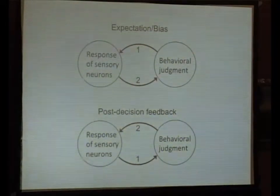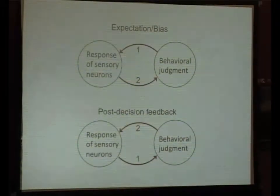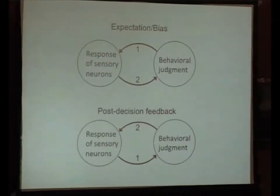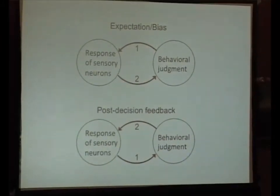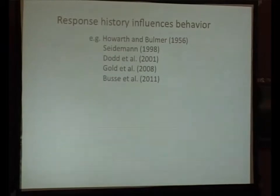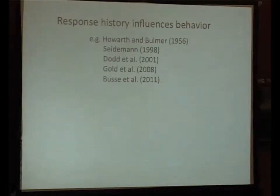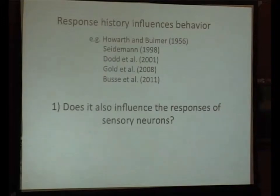What has been somewhat frustrating is that when talking about these top-down signals, people often ask what kind of top-down signal do you think it is, and I don't think we actually had a good way of differentiating between these broad classes. I'm quite excited because this new analysis allows us to get a handle on this question. I'm going to take advantage of a psychophysical observation made in humans, monkeys, and mice — that the choice on the current trial is actually influenced by how the subject responded on previous trials. The first question I'm going to ask is whether this response history also affects the responses of sensory neurons.